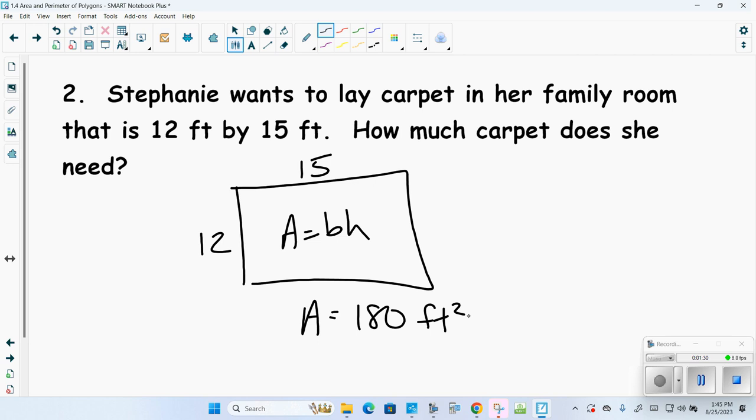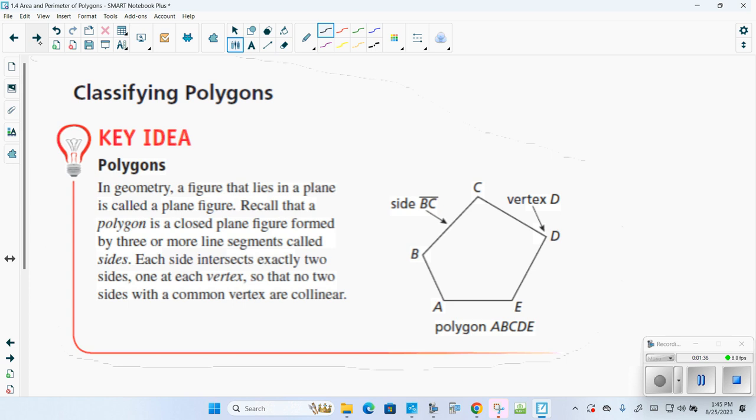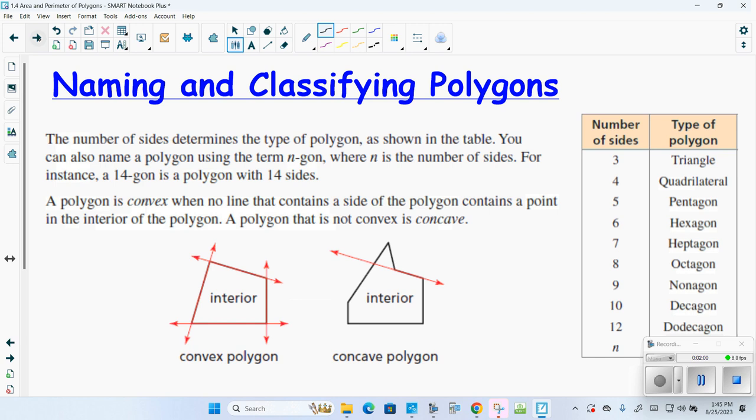Classifying polygons. First, you have to understand what a polygon is. A polygon is all straight sides. In geometry, a figure that lies on a plane is called a plane figure. Recall that a polygon is a closed plane figure. Each side intersects at what is called a vertex. Now, concave versus convex, and then classifying by the number of sides. Let's do the number of sides first.